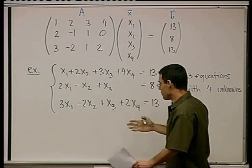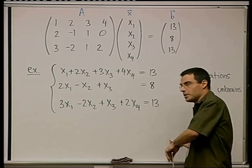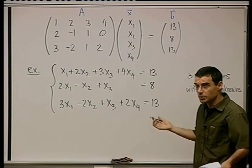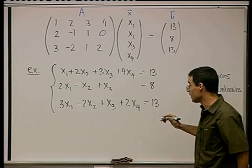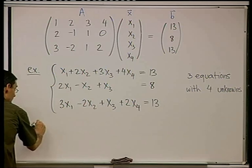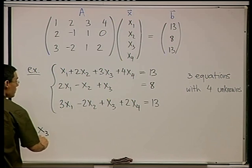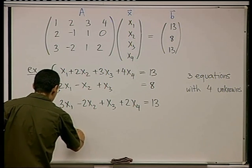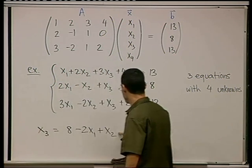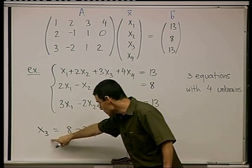Isolate one variable, one of the unknowns, in terms of the others. There's of course a lot of flexibility here. You can choose to start with whatever equation you want and isolate whatever unknowns you want. I'm going to start from equation number two and isolate x3. Do you agree that I can write that x3 equals 8 minus 2x1 plus x2?